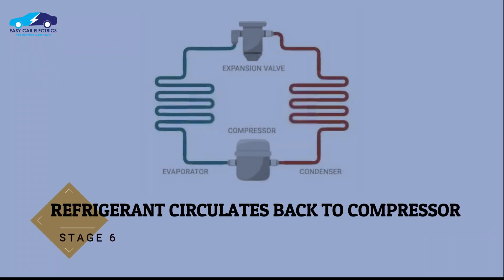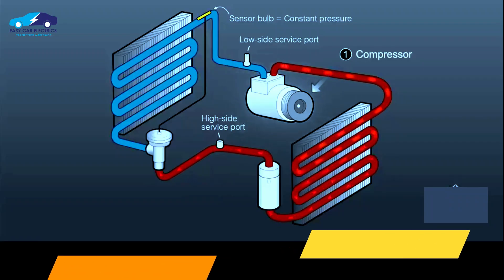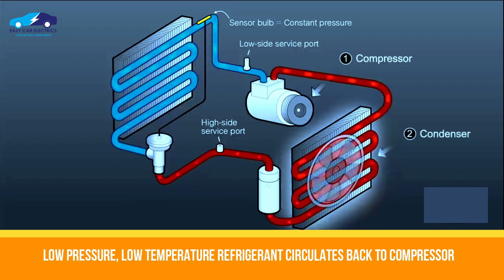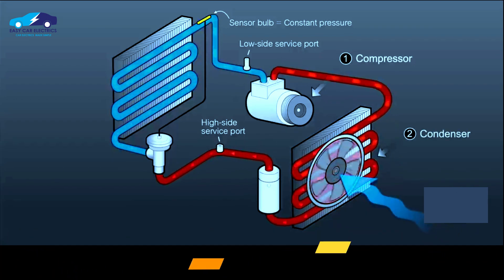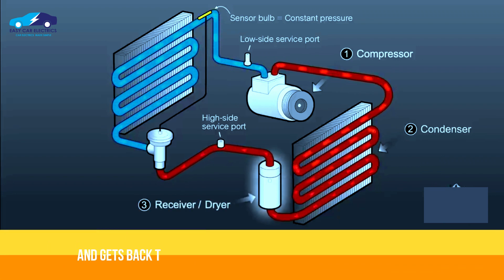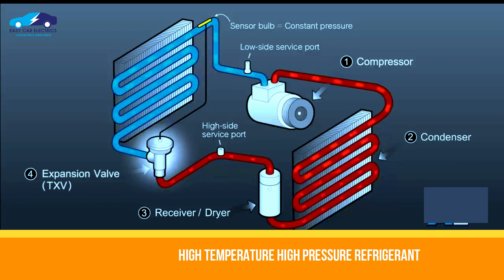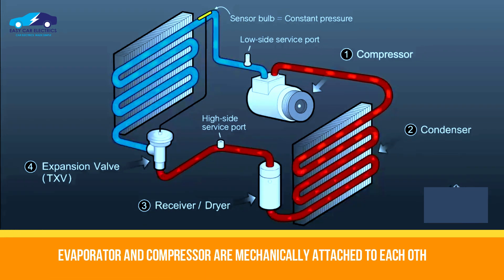Stage 6: Refrigerant circulates back to the compressor. The low-pressure, low-temperature vapor refrigerant coming from the evaporator circulates back towards the compressor and gets compressed back into a high-pressure, high-temperature vapor refrigerant, because the evaporator and the compressor are mechanically attached.